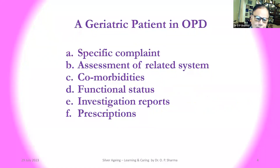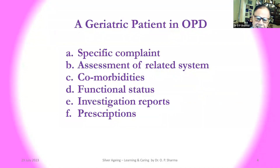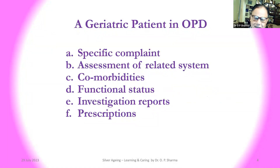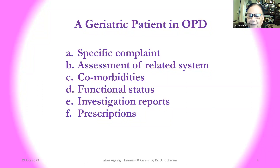When the patient comes to us in the OPD for a specific complaint — either comes or is brought — either he complains or his attendant or caregiver complains. Based upon that, we do the assessment of the related system. For example, if somebody has come with chest pain, we think of a coronary problem first, or a chest problem related to muscles, lungs, or the bony cage. As age advances, the incidence of comorbidities increases — diabetes, hypertension, heart failure, COPD, CLD, etc.